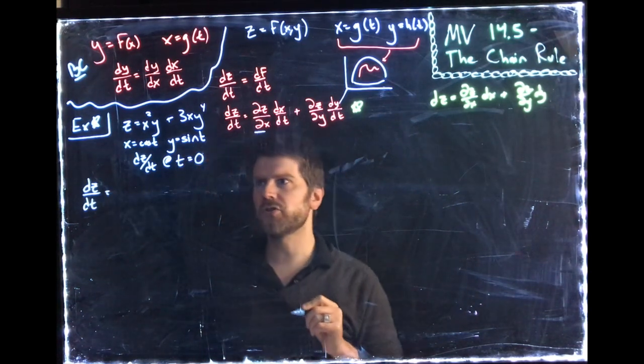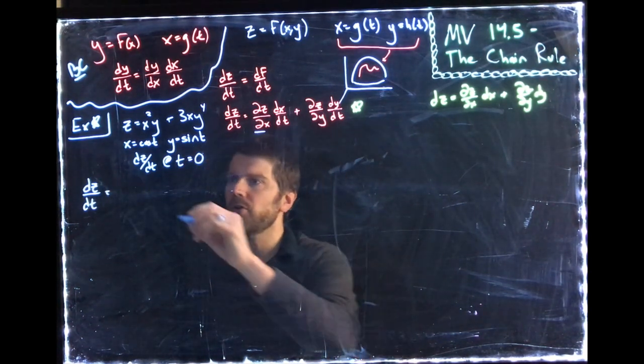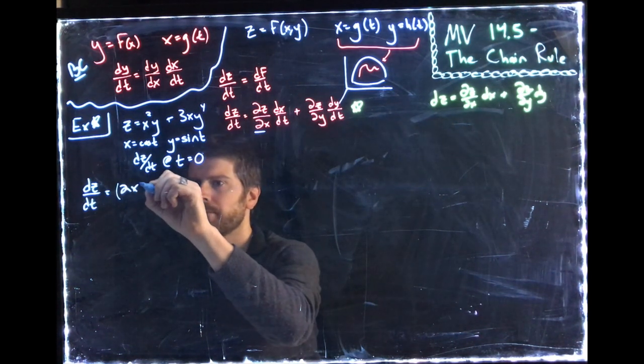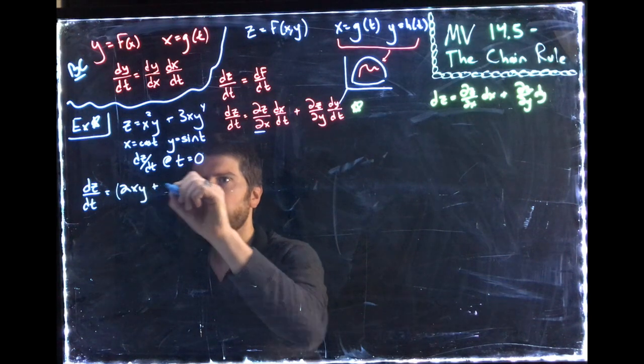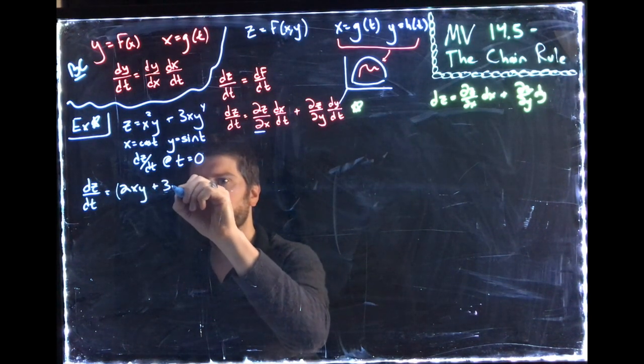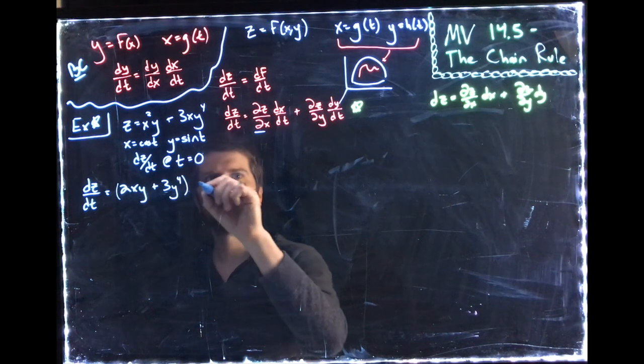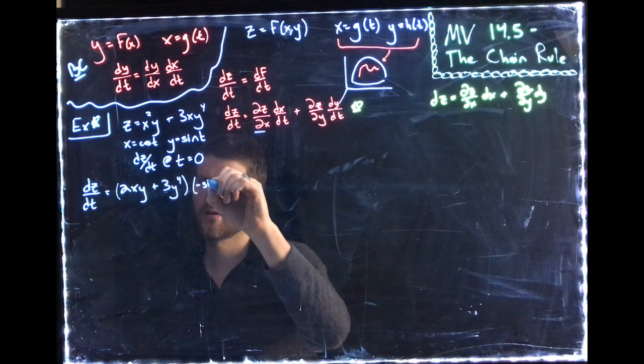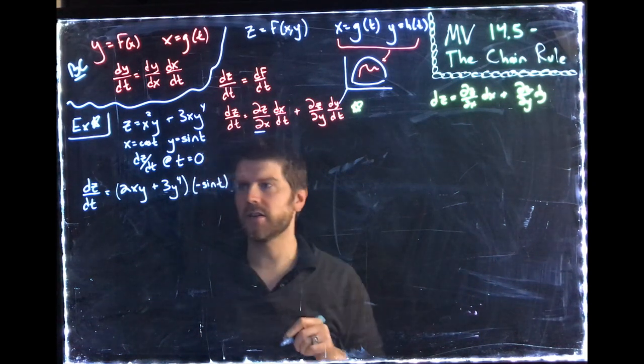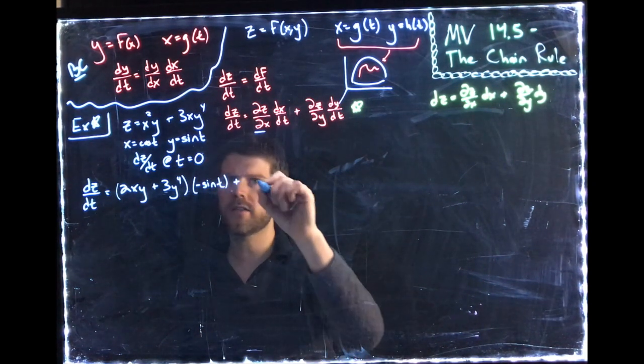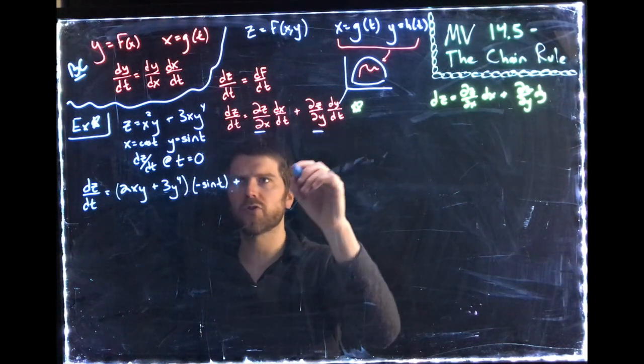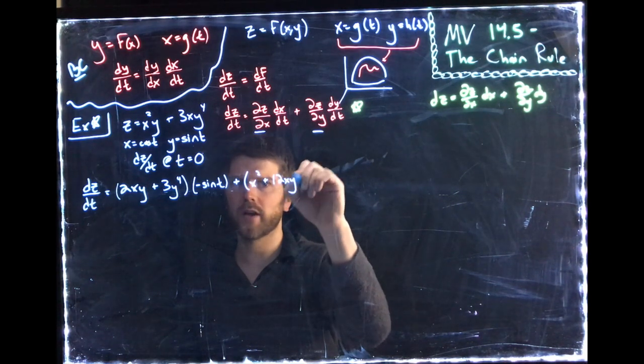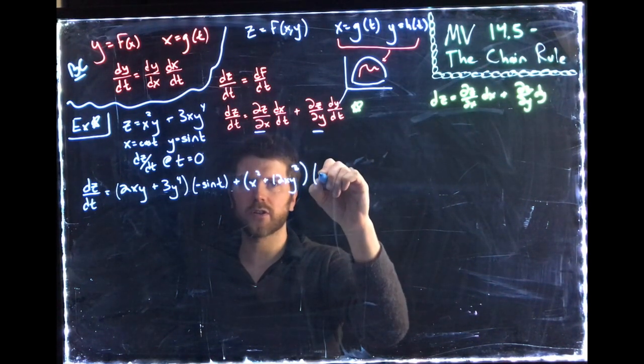So we start with finding partial z partial x. So partial z partial x is 2xy plus 3y to the fourth. And then dx/dt turns out to be negative sine t plus, now we'll do our partial z partial y. x squared plus 12xy cubed, dy/dt is cosine t.